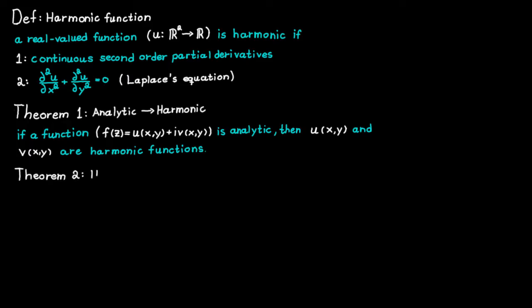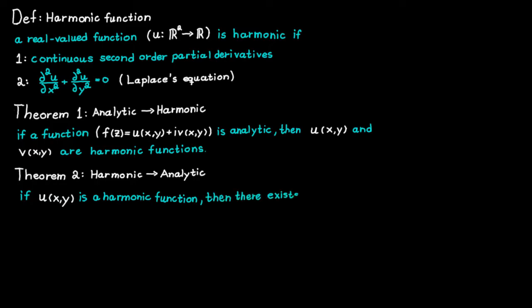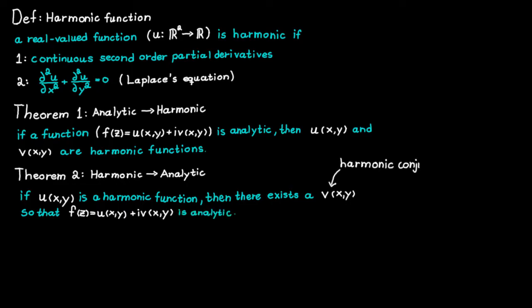In the next theorem we go the other way around. It states that if a function u is harmonic, then there exists a function v such that the function f is analytic. This function v is often referred to as the harmonic conjugate of the function u.